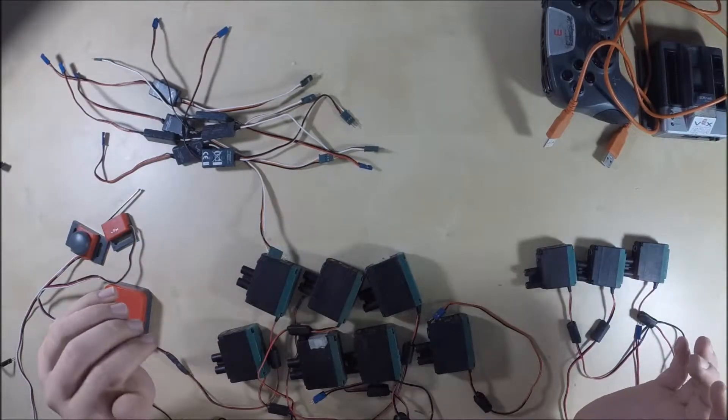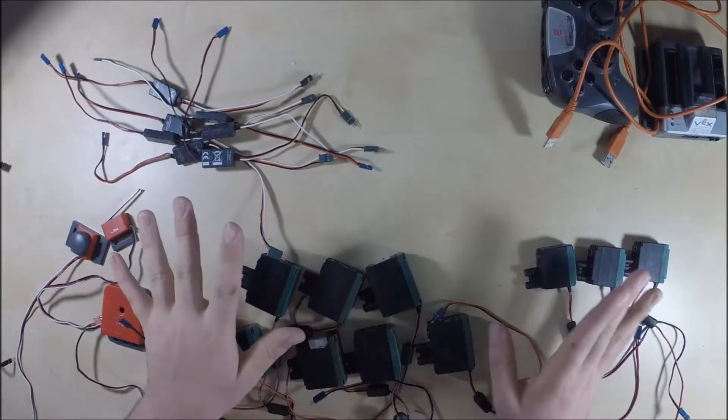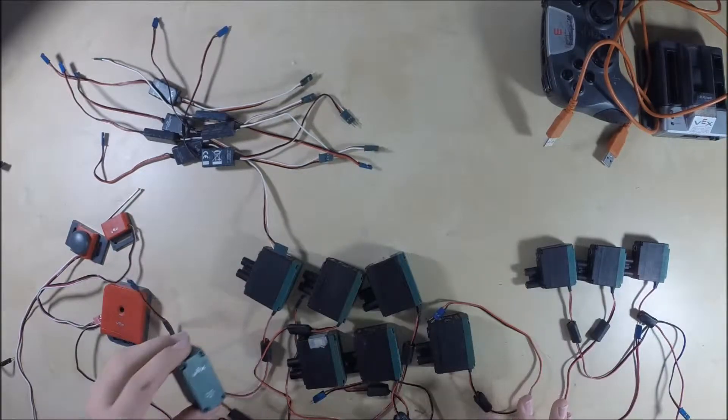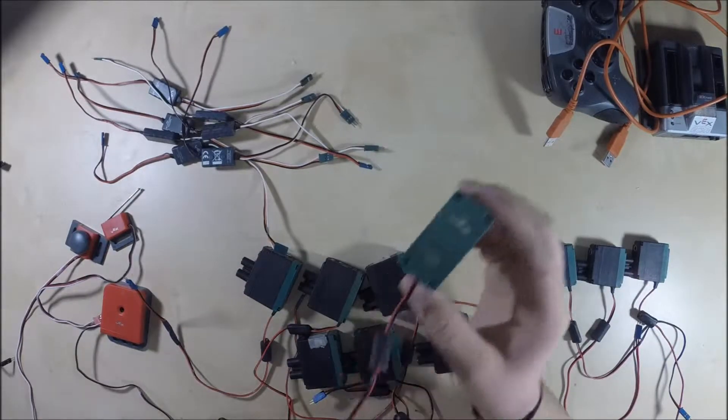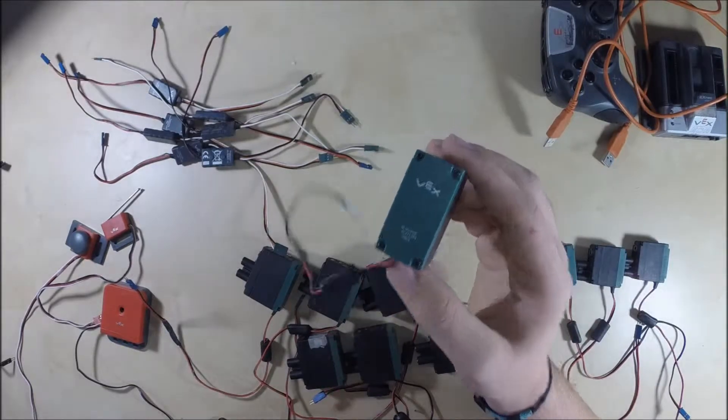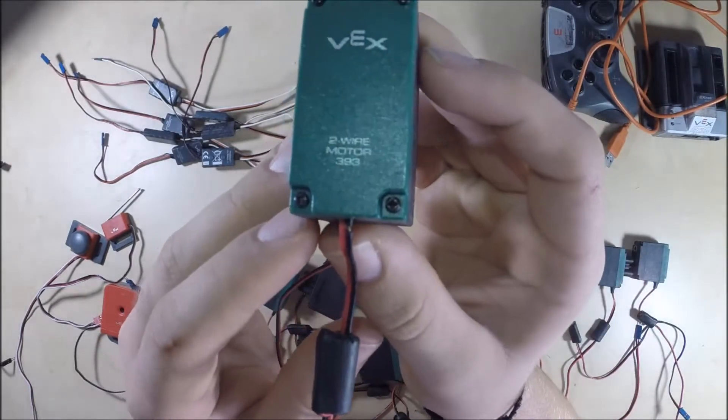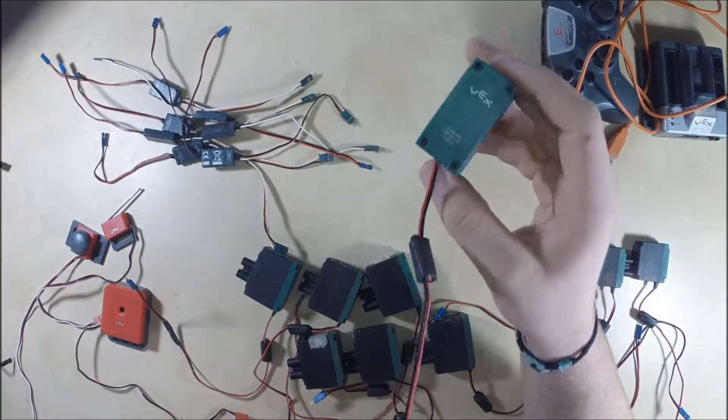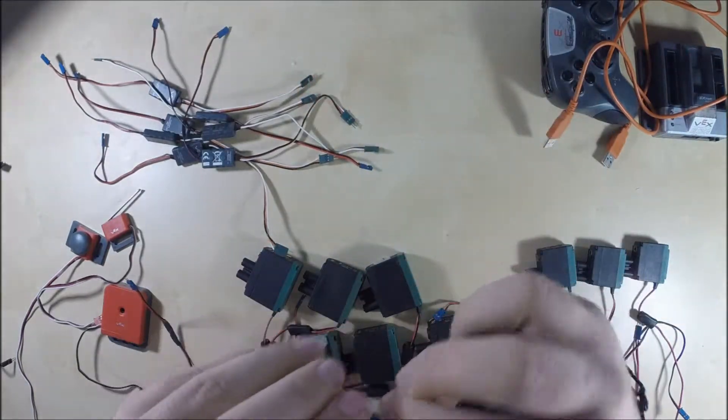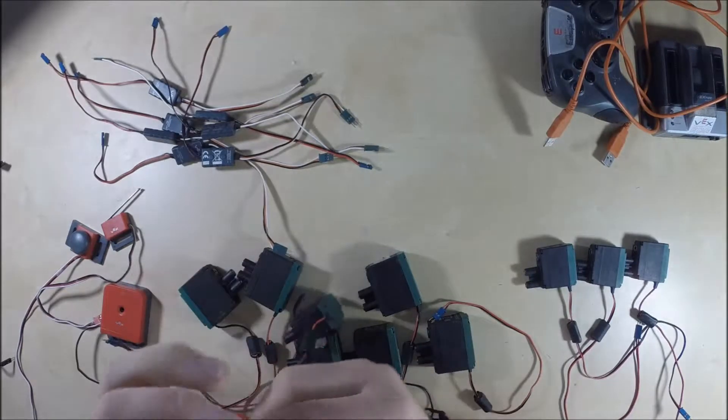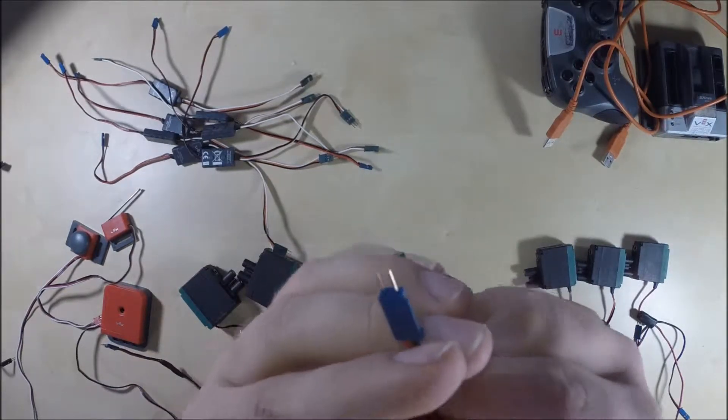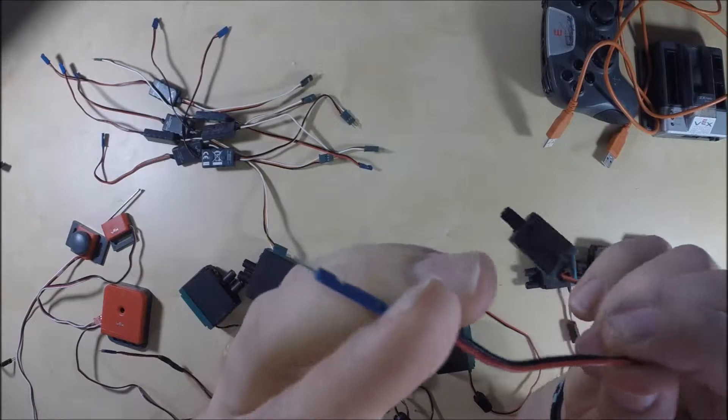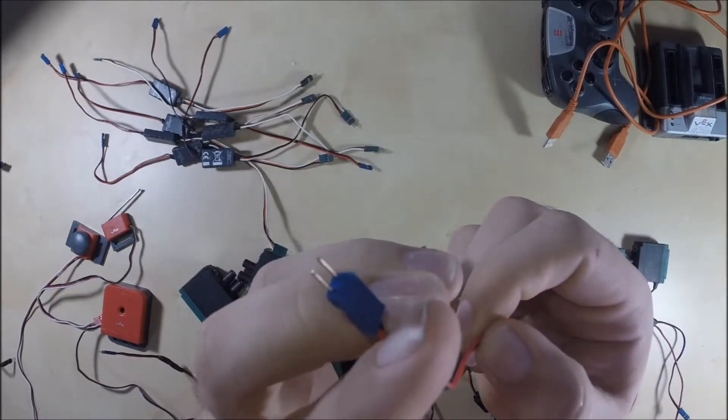Okay, then we have our motors. So VEX, at least this year, allows you to have ten motors of any kind. So these are the most popular motors—they're two-wire 393s. You can see right there, two-wire motor 393. And the reason it's called two-wire is because on the end here are literally two wires.